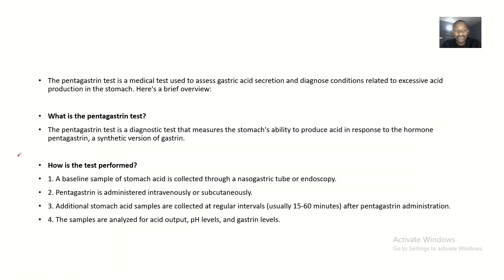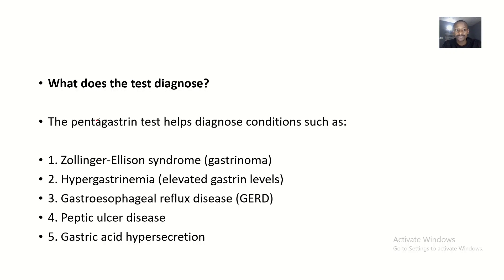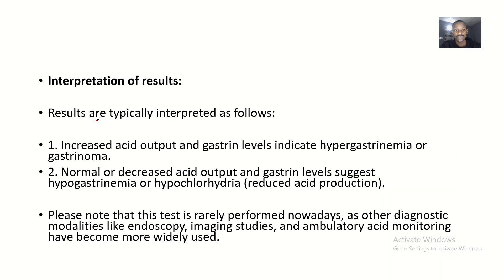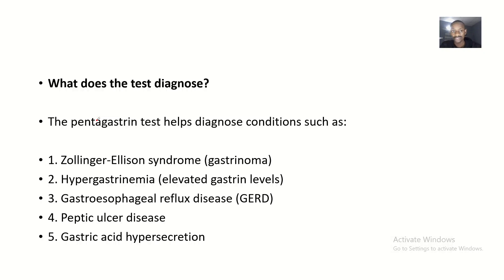Here is how the short notes should be arranged: we have the overview, the definition, the procedure — that's how the test is performed — then what the test diagnoses, which covers disease conditions where a pentagastrin test might be done, and lastly, the interpretation of results.